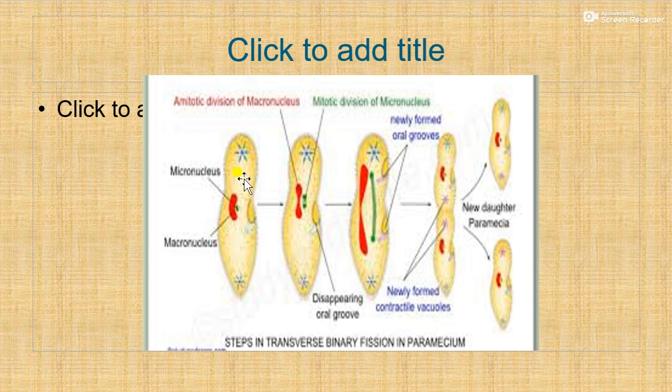Paramecium undergoes binary fission during favorable conditions. A full-grown paramecium divides into two daughter individuals. Before the beginning of fission, paramecium stops feeding and its oral groove and buccal structures begin to disappear. The micronucleus increases in size and starts dividing mitotically.